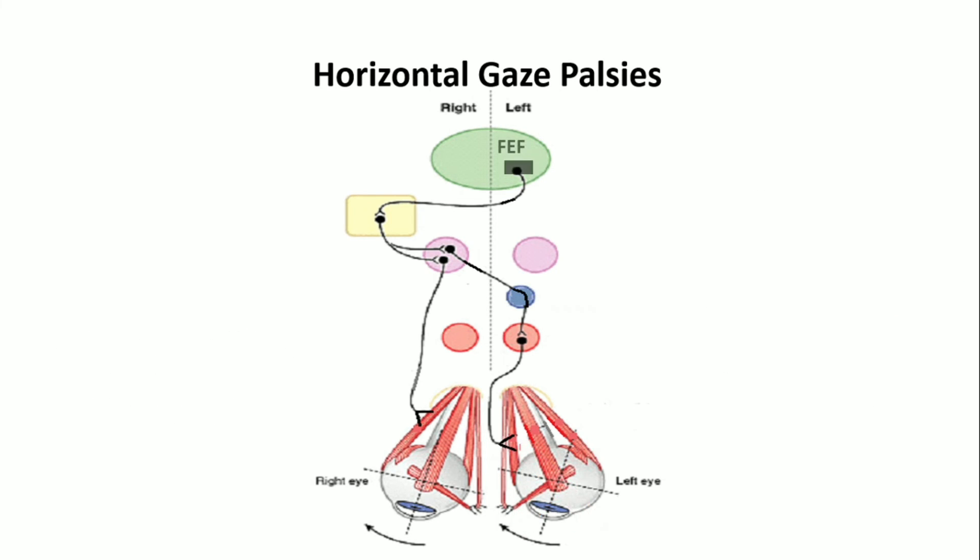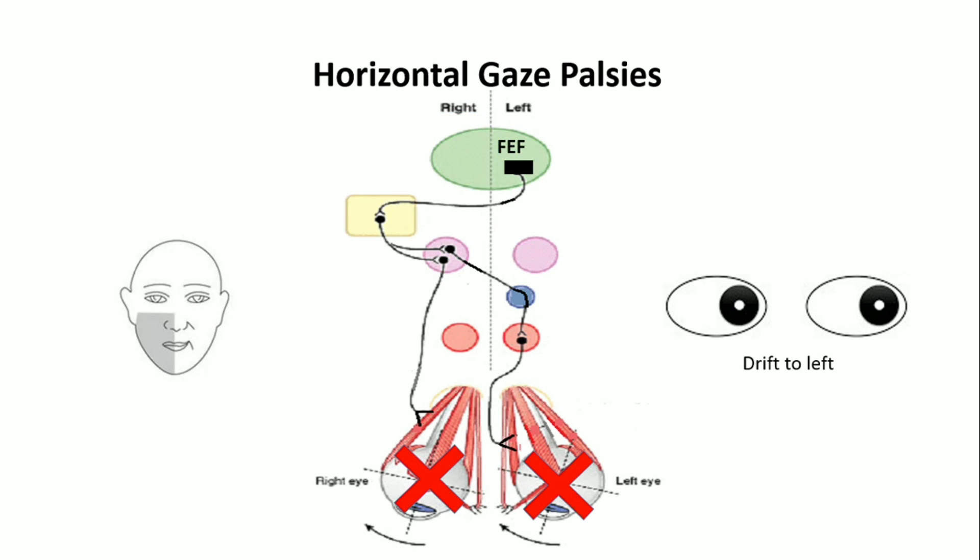In left FEF lesion, neither eye can look right. The eyes slowly drift to the left due to unopposed opposite FEF activation. Additionally, right lower face or right upper limb weakness can be seen.